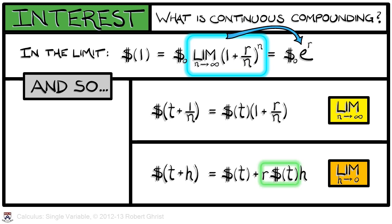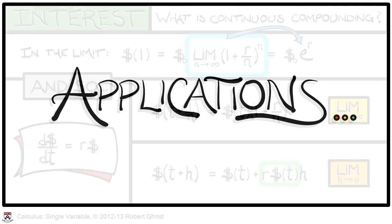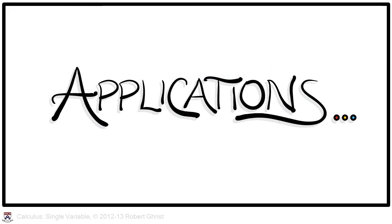The coefficient in front of the h term tells us the derivative of the amount of money as a function of t. And so, we can see the differential equation d/dt of the amount of money equals r times the amount of money. That is our standard differential equation. Now, there are many applications of this equation that go far beyond radioactivity and population and money.